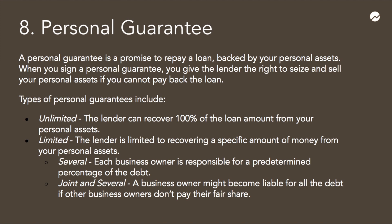Limited personal guarantees can be further broken down into two types: several and joint and several. These are commonly used terms for multiple owner businesses. Under a several limited guarantee, each business owner is responsible for a predetermined percentage of the debt, and a creditor can come after each business owner only for their respective portion of the debt. In contrast, in a joint and several limited guarantee, a business owner might become liable for the entire debt if other business owners don't pay their fair share. With your personal assets on the line, signing a personal guarantee can be risky, but it's usually required to receive a business loan.